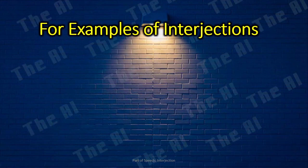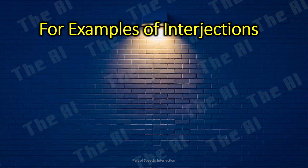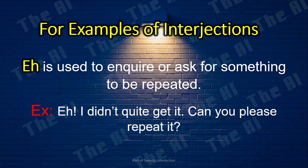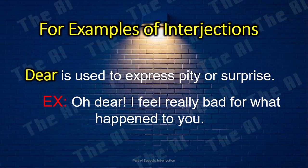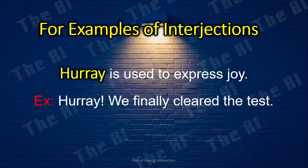More examples of common interjections used in sentences: Alas — used to express sadness or pity. Example: Alas! That was so unfortunate. Ah — used to express realization or surprise. Example: Ah, the magic show at the end was a total surprise. Eh — used to inquire or ask for something to be repeated. Example: Eh! I didn't quite get it. Can you please repeat it? Dear — used to express pity or surprise. Example: Oh dear! I feel really bad for what happened to you. Hey — used to express surprise or call for attention. Example: Hey! Look out for the car. Hooray — used to express joy. Example: Hooray! We finally cleared the test.